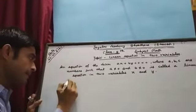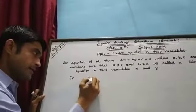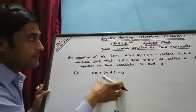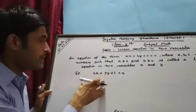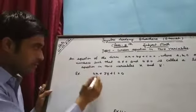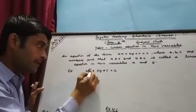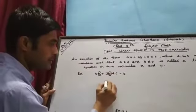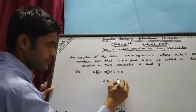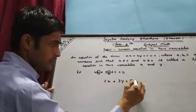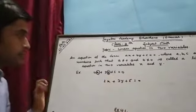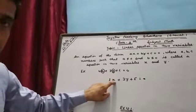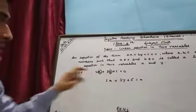For example, 4x plus 3y plus 6 — this is an example of a linear equation in two variables. Here you can see one variable and another variable. Students, here the variable is x, that one is y, and this is your constant.